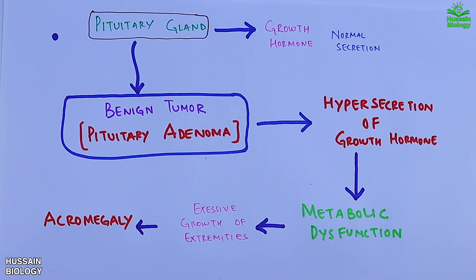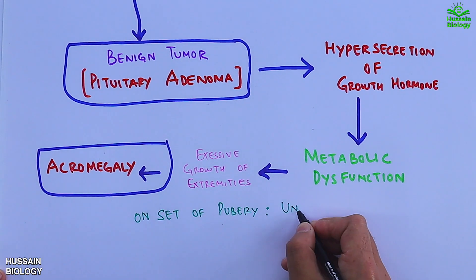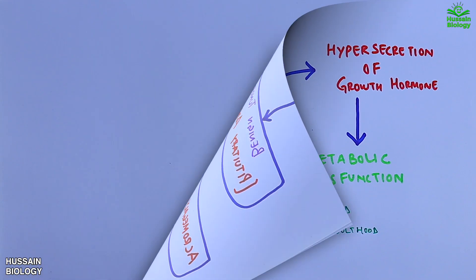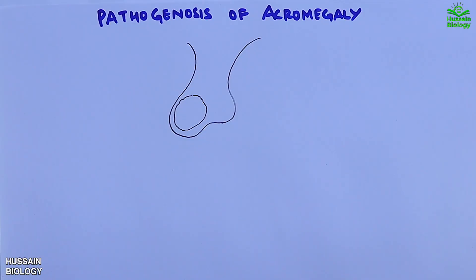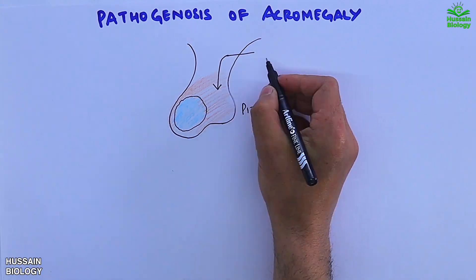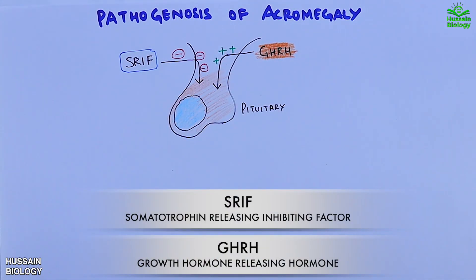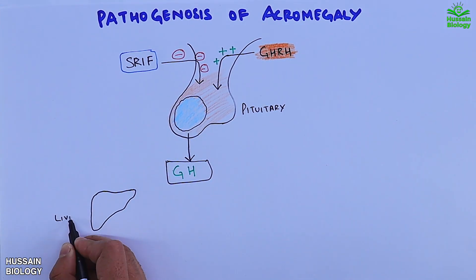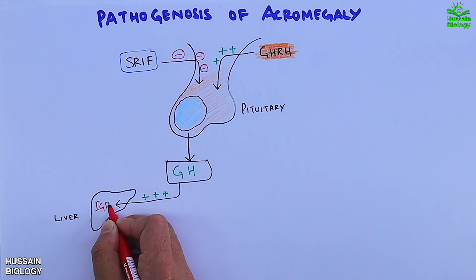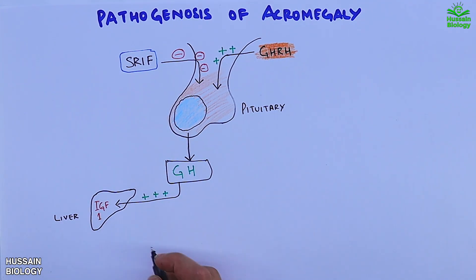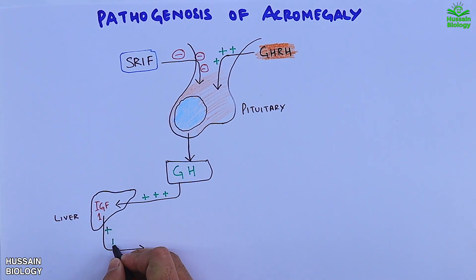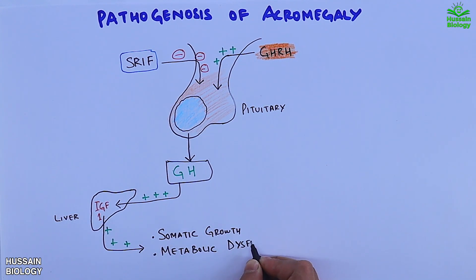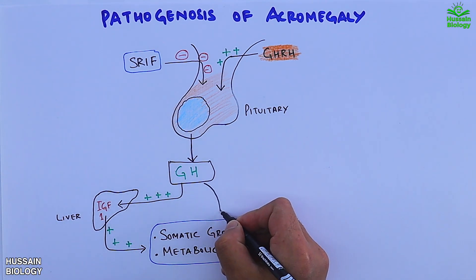On the onset of puberty the individuals are unaffected, and this disorder develops in adulthood. In the pathogenesis, the presence of GHRH and absence of SRIF from the hypothalamus drives the release of growth hormone from the pituitary. This growth hormone then enters the liver where it stimulates the production of IGF-1. IGF-1 through various pathways has a positive effect on somatic growth, and continuous IGF-1 leads to metabolic dysfunction. Growth hormone also has a direct effect on somatic growth.